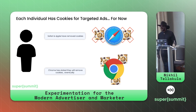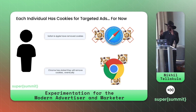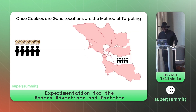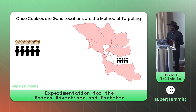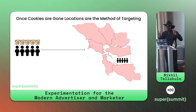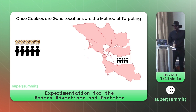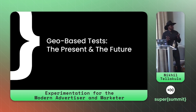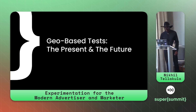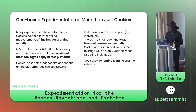As cookies fade from our ecosystem, instead of targeting individuals based on cookies, we'll be targeting based on their locations — where they live, where they ship to. For example, instead of tracking five individuals across the world via cookies, we say we're only going to reach individuals in Alameda County based on their location. This leads into geo-based testing and the experimentation module I'll be talking about today — it's the present, and potentially the future.